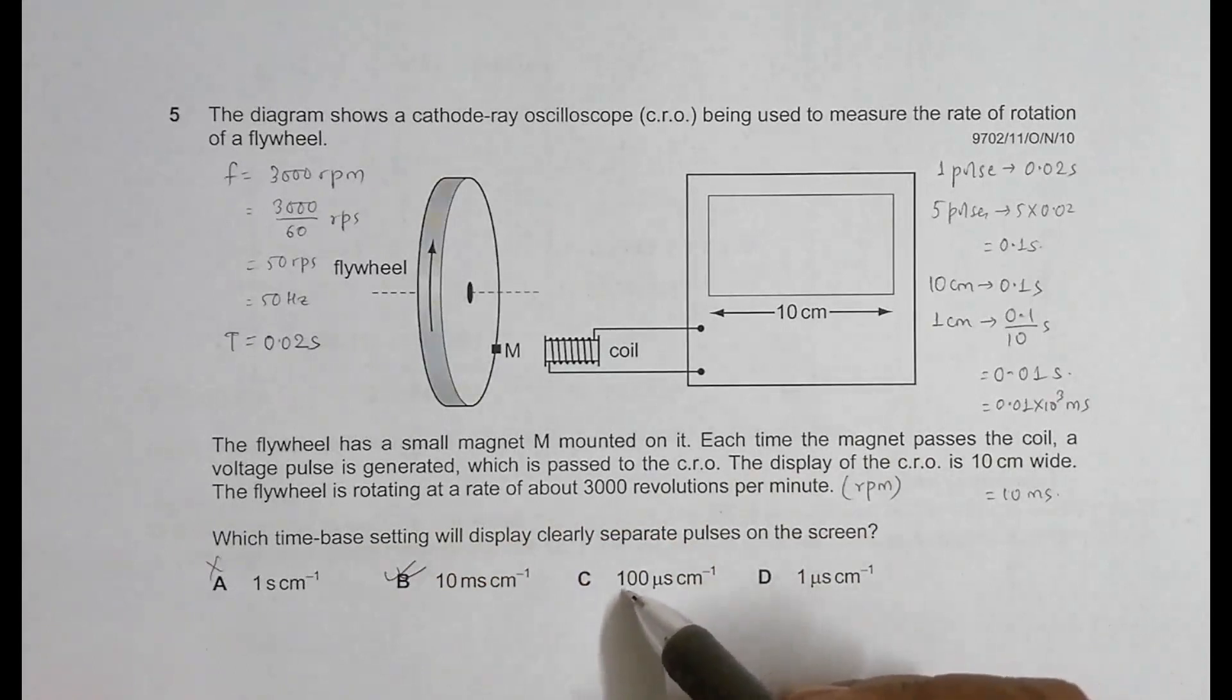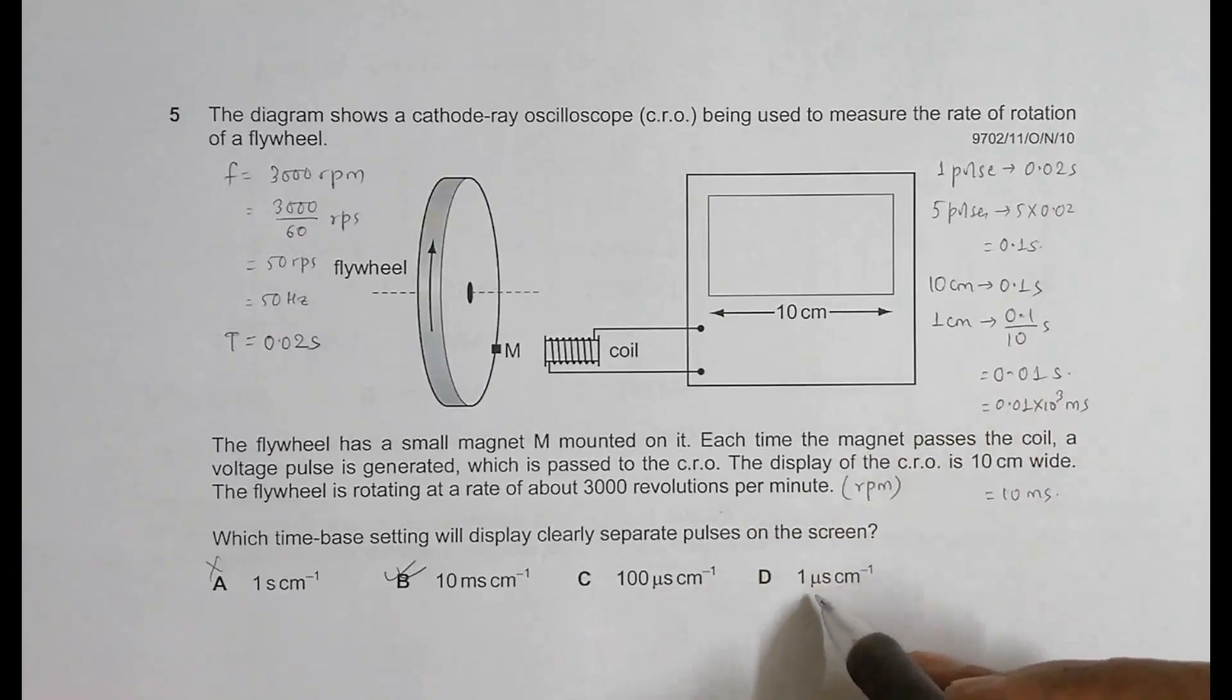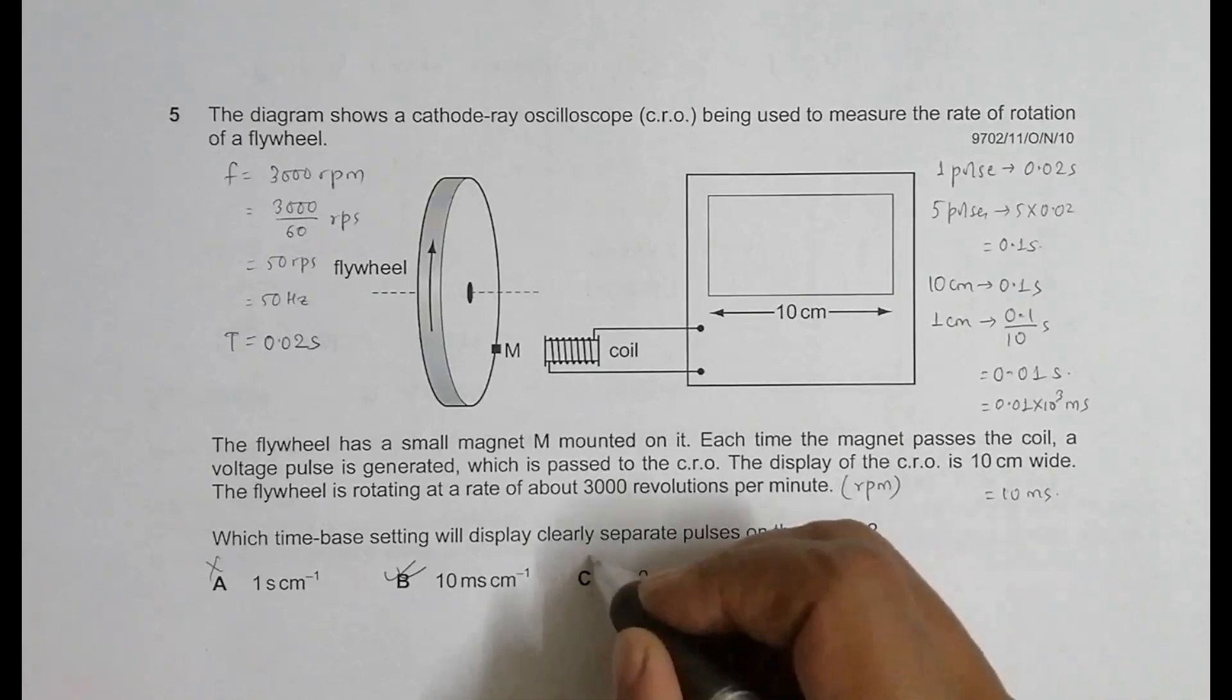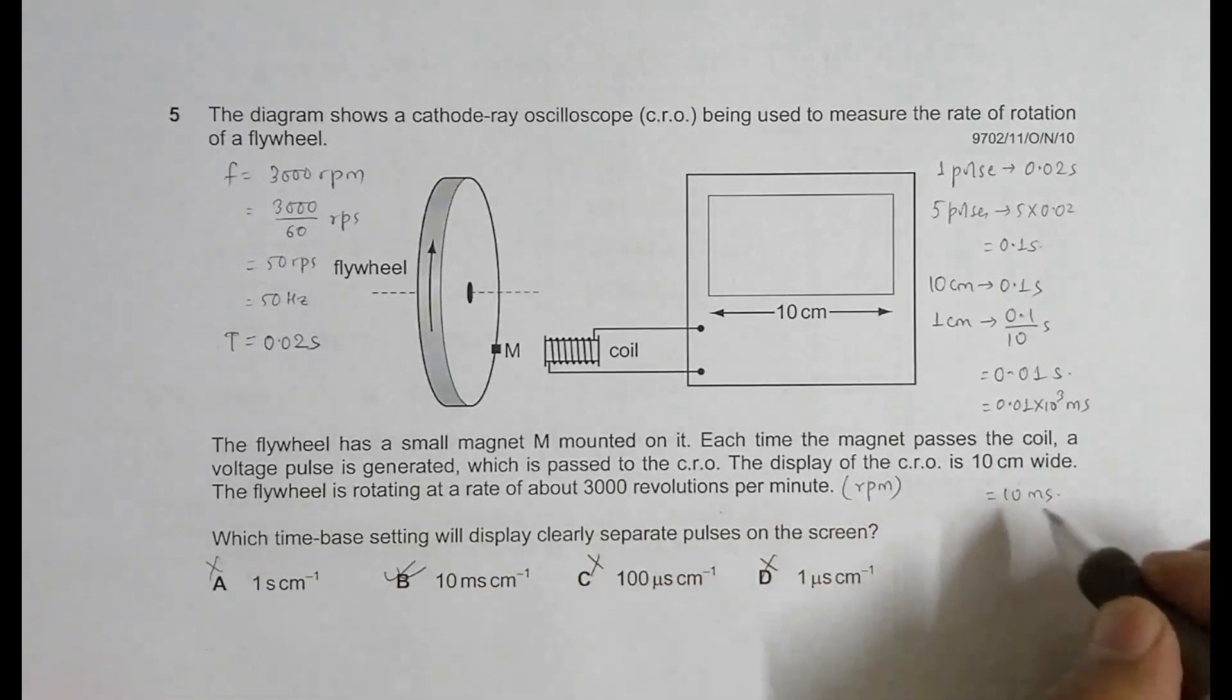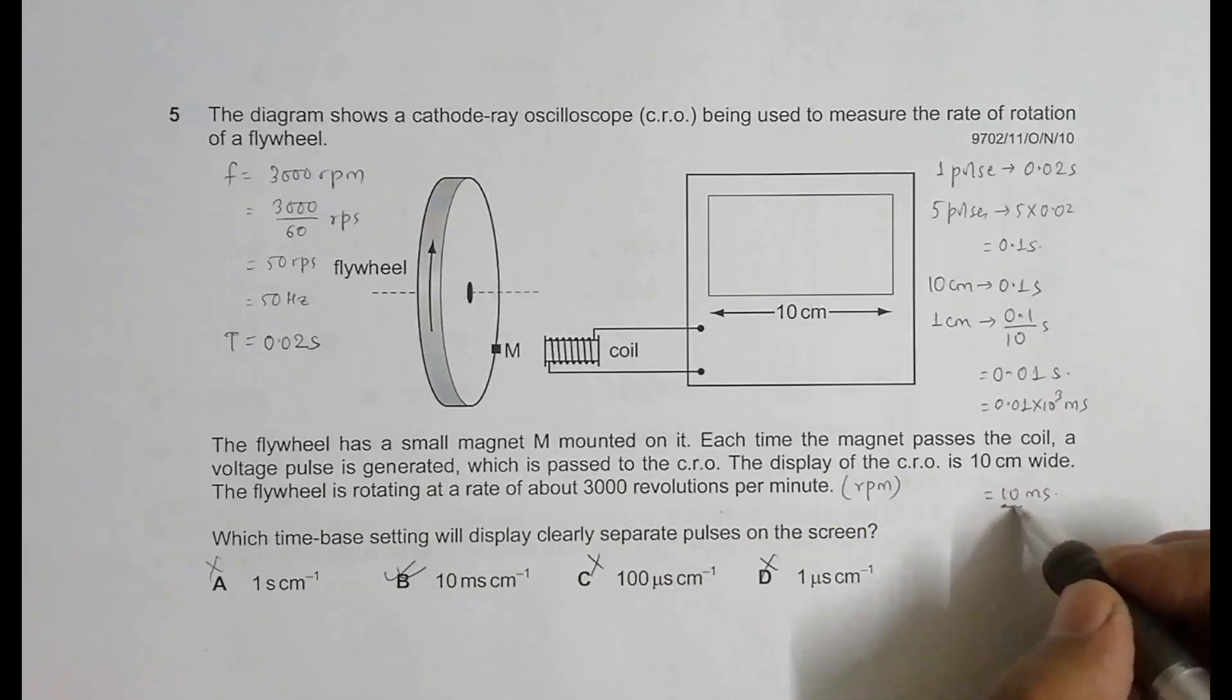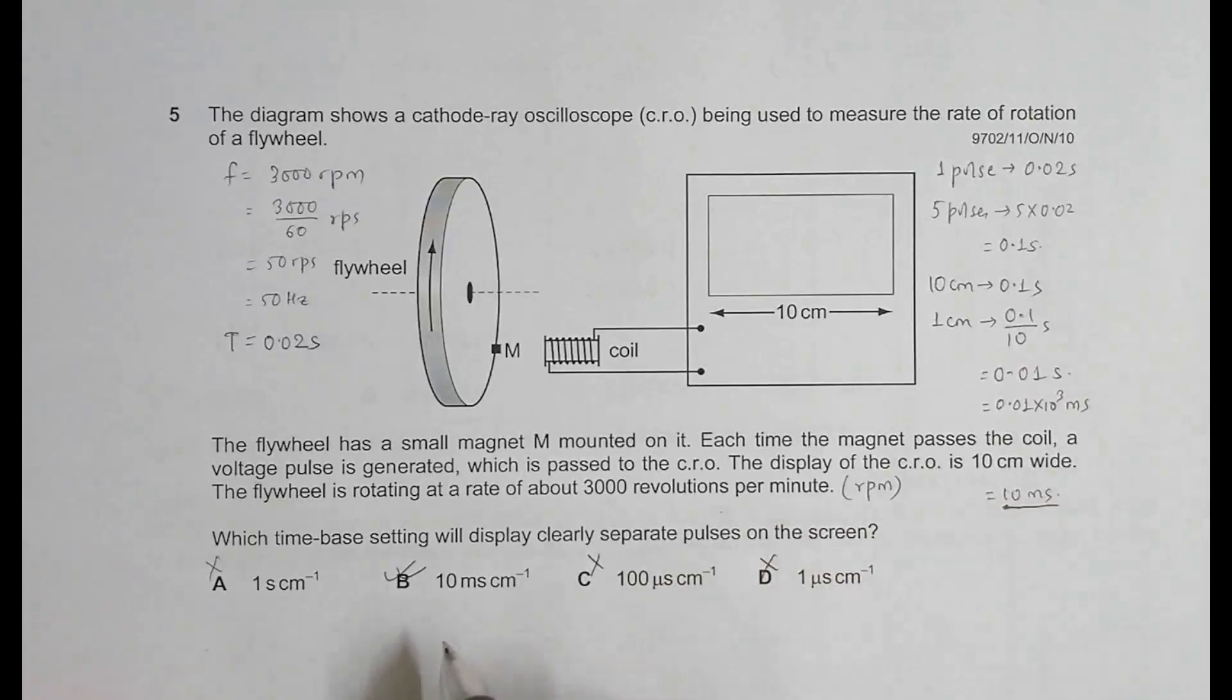Let's check choice C as well. We have 100 microseconds, which equals 0.1 milliseconds per centimeter—not correct. Choice D has 1 microsecond, which in milliseconds would be 0.001—also incorrect. So the correct choice is choice B.